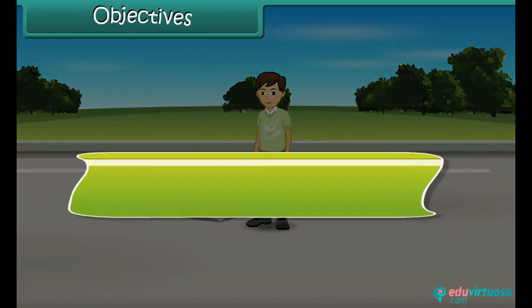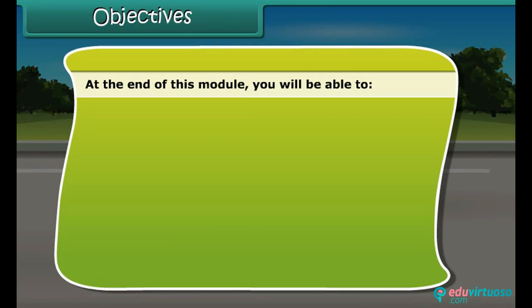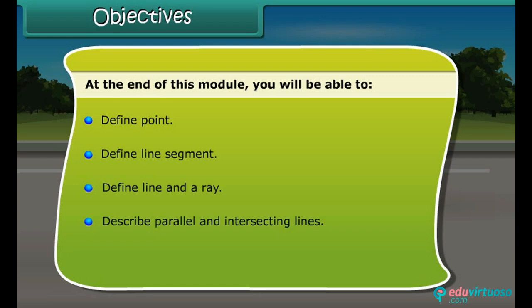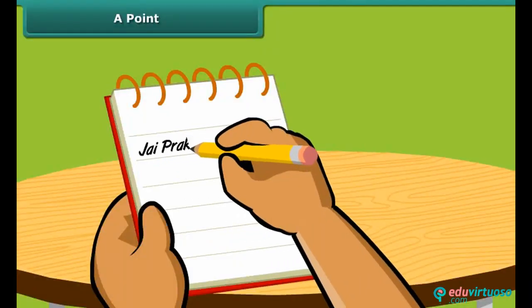Objectives. At the end of this lesson, you will be able to: define point, define line segment, define line and ray, describe parallel and intersecting lines, and identify an angle.